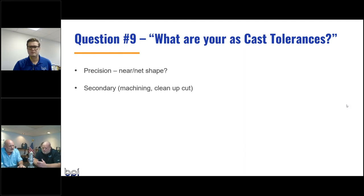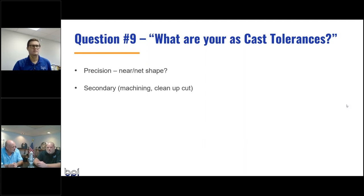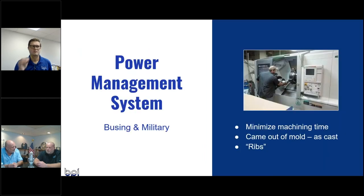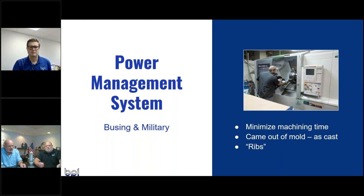With casting in general, you can get to near-net-shape and minimize secondaries, but you've got to make sure those tolerances for near-net-shape will fit your process and your final end product.